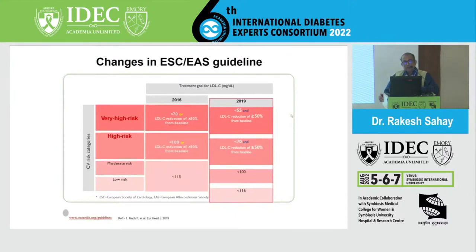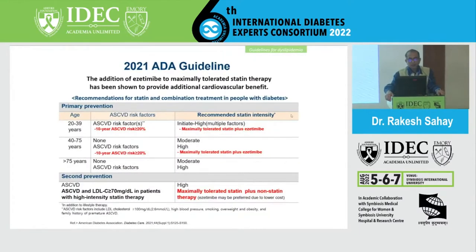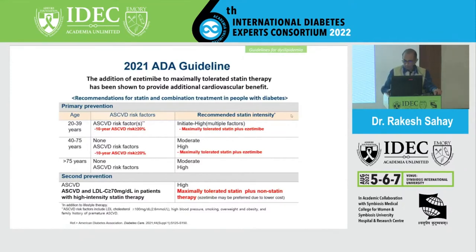Looking at the recent update from the ESC — the European Society of Cardiology — they have brought down the target LDL levels in those with high risk to less than 70, and those with very high risk, meaning those with a previous cardiovascular event and diabetes, to less than 55. The ADA position statement follows similar targets to the ACC/AHA.